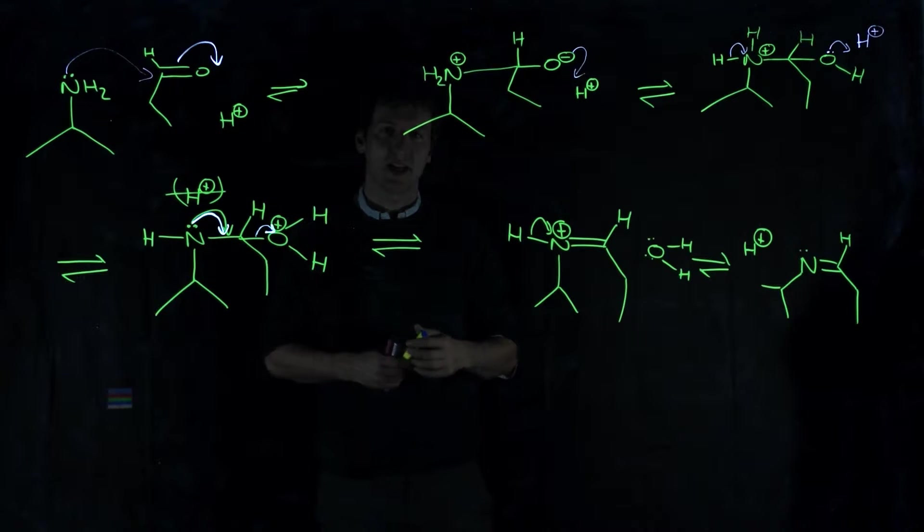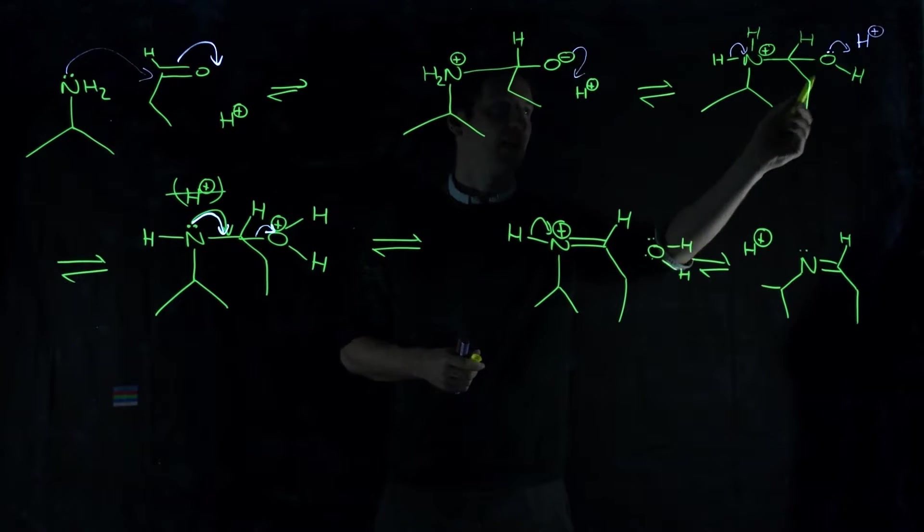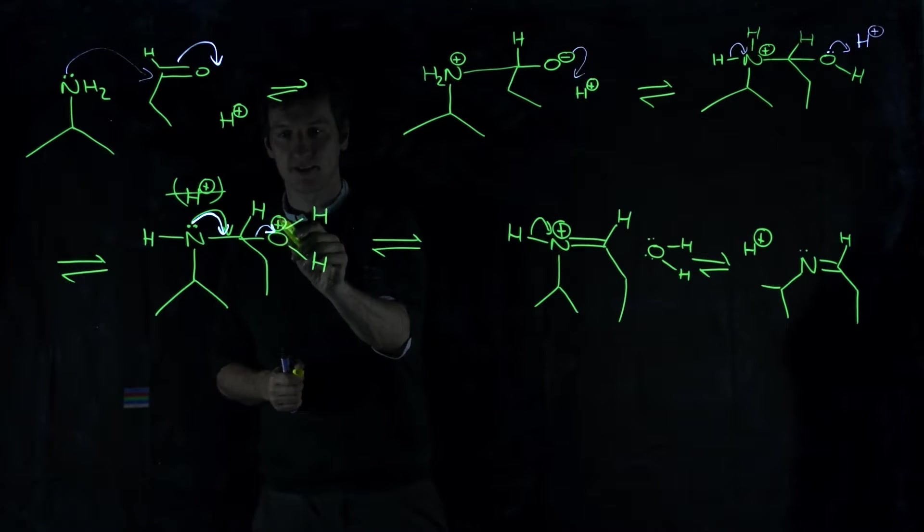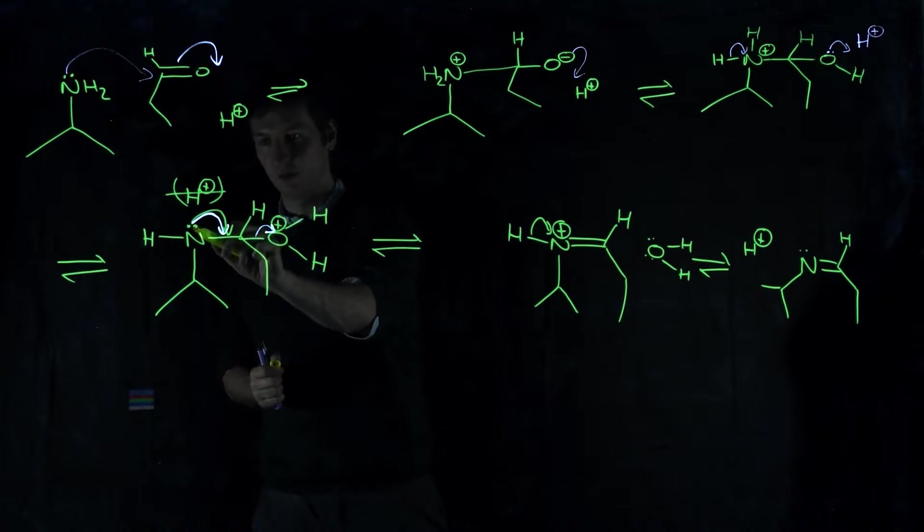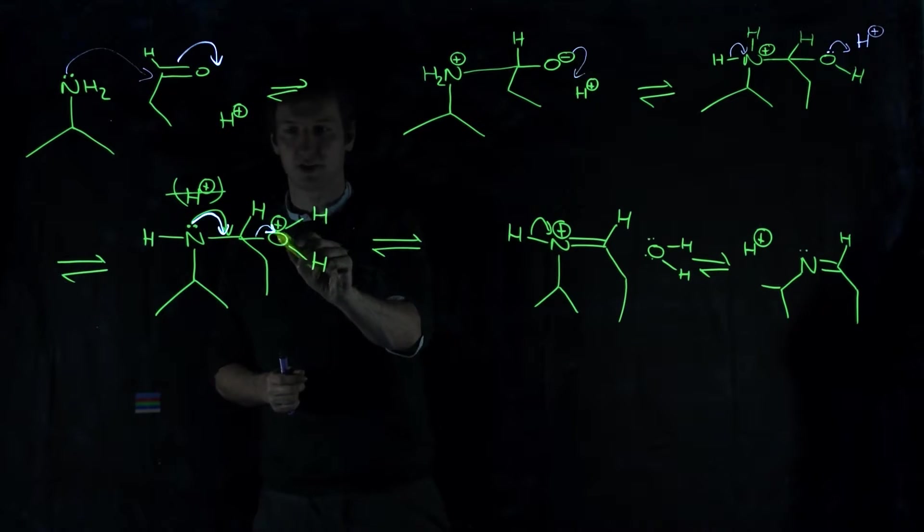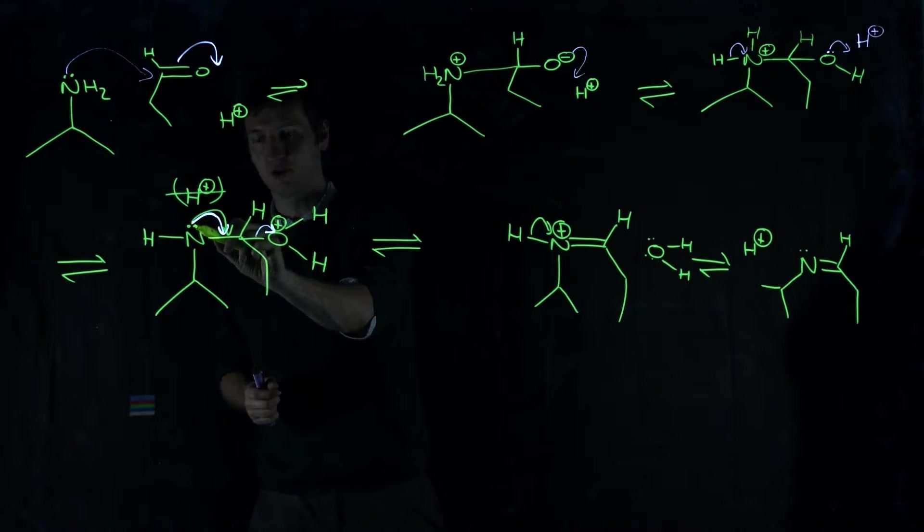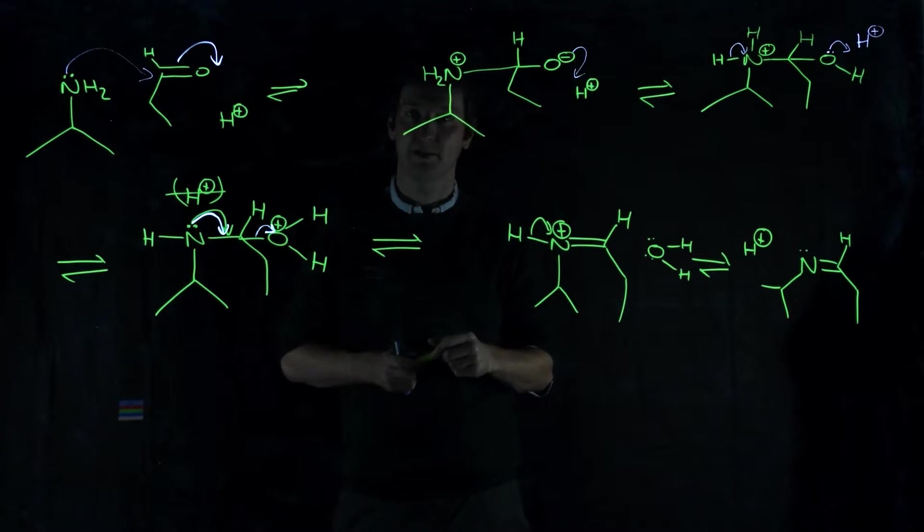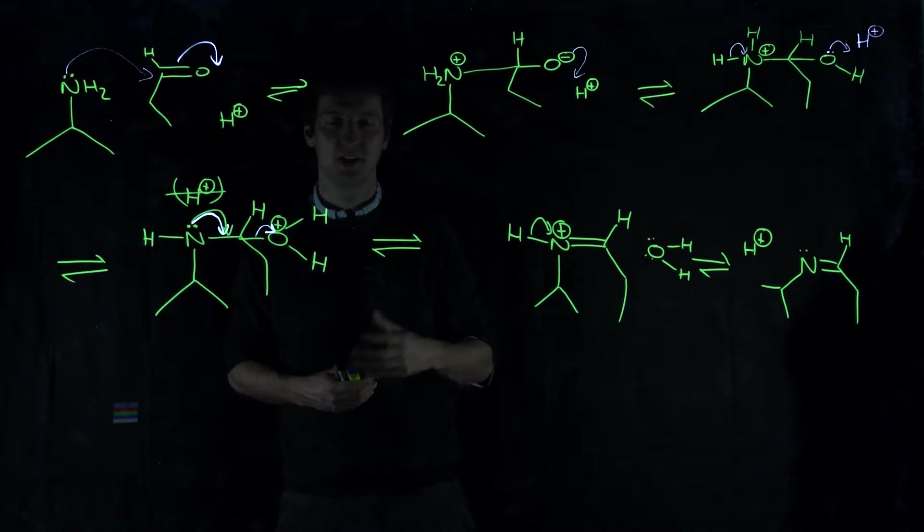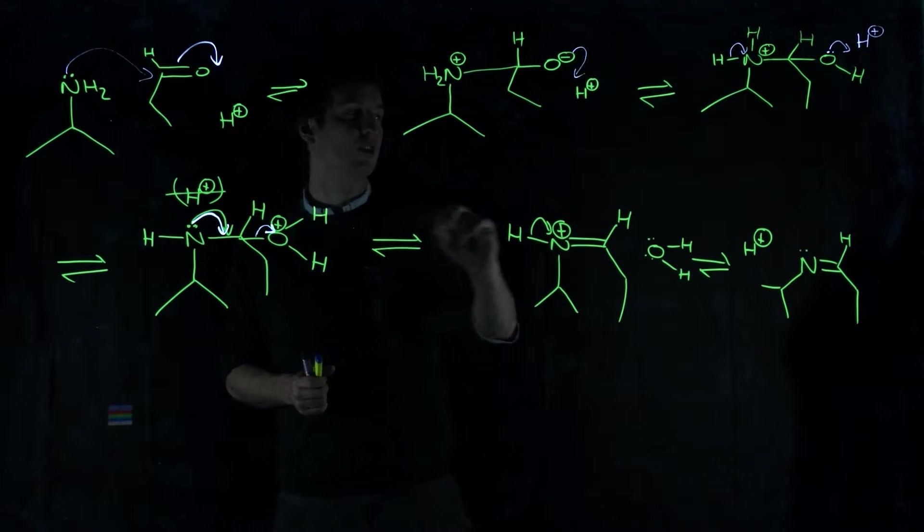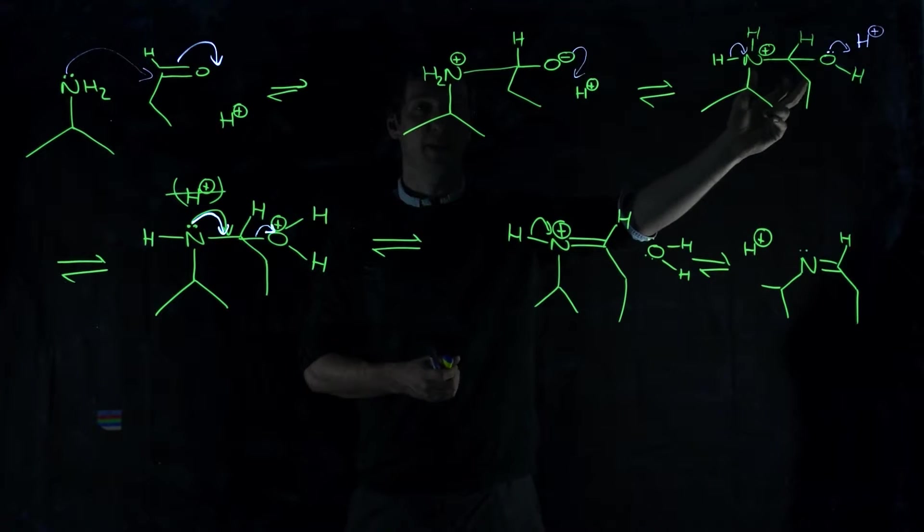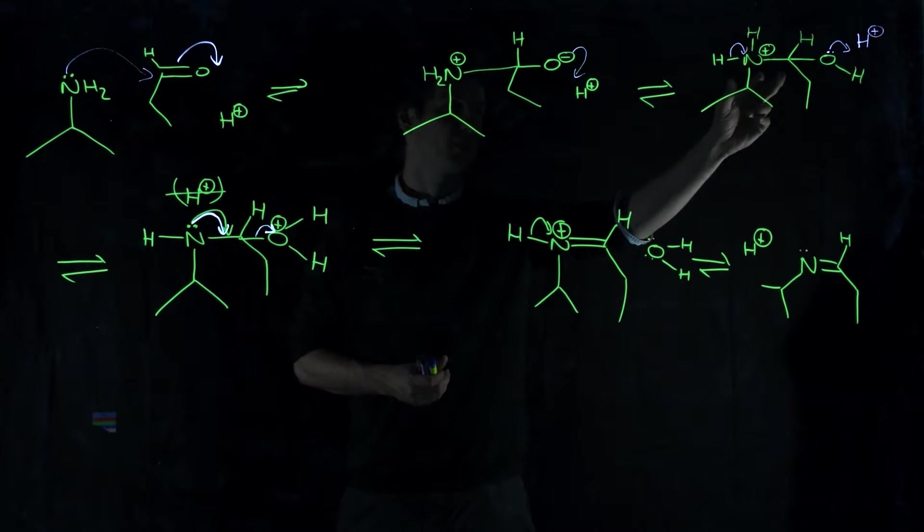Which step wouldn't work without the acid? Well, when you get to here, if you don't protonate the water, this is never going to be a good enough leaving group to leave without the proton attached, because you're not going to be able to use that lone pair to kick out hydroxide. That's really unlikely to happen. It would be really energetically unfavorable. So, you have to have the acid, otherwise you'll get stuck in this situation. And that's called a hemiaminol, which is an interesting name for it, but that's what it's called.